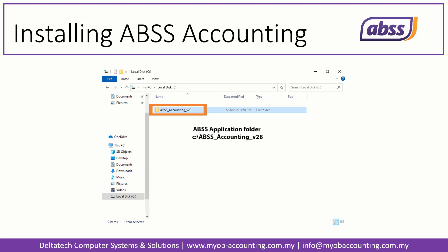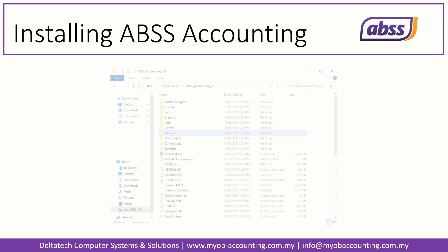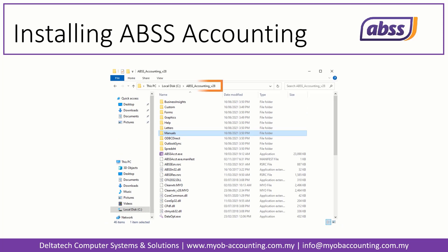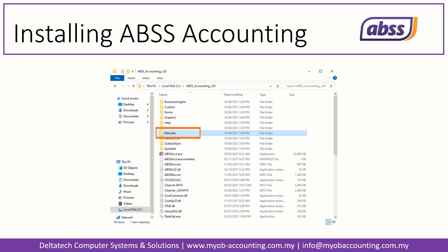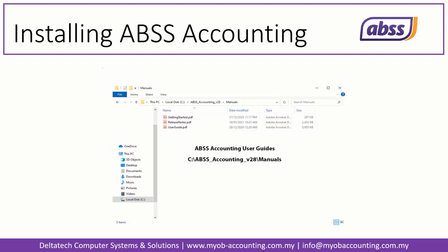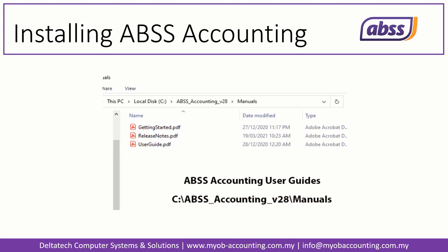As mentioned earlier, the folder name might be different from the one shown here. For example, if you were installing version 27, then the folder you see will be C, ABS-S Accounting, V27. Inside the ABS-S Accounting folder, open the Manuals folder. In the Manuals folder, you will find three guides: the Getting Started Guide, Release Notes, as well as the User Guide.